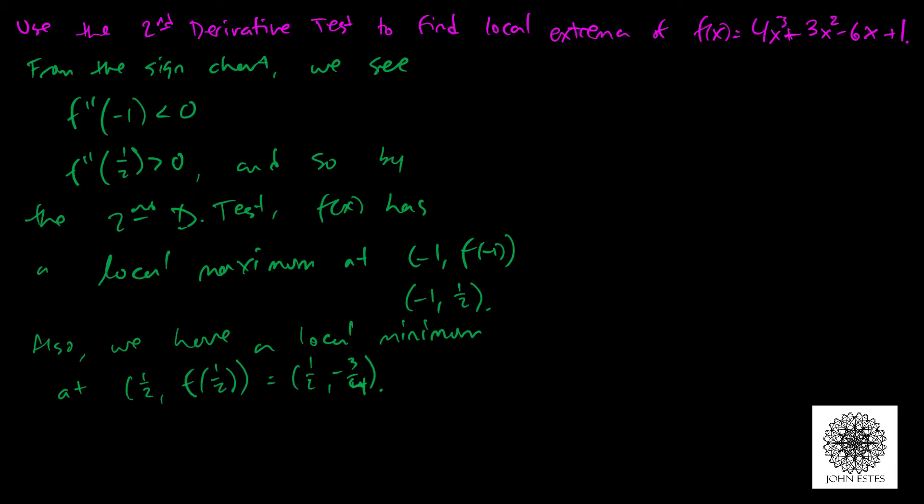if you watch the video that I did with the same example using the first derivative test, you'll see that these results are consistent. So again, we have a local max at (-1, 1/2) and a local min at (1/2, -3/4). How do we know that? Because there are critical points, so